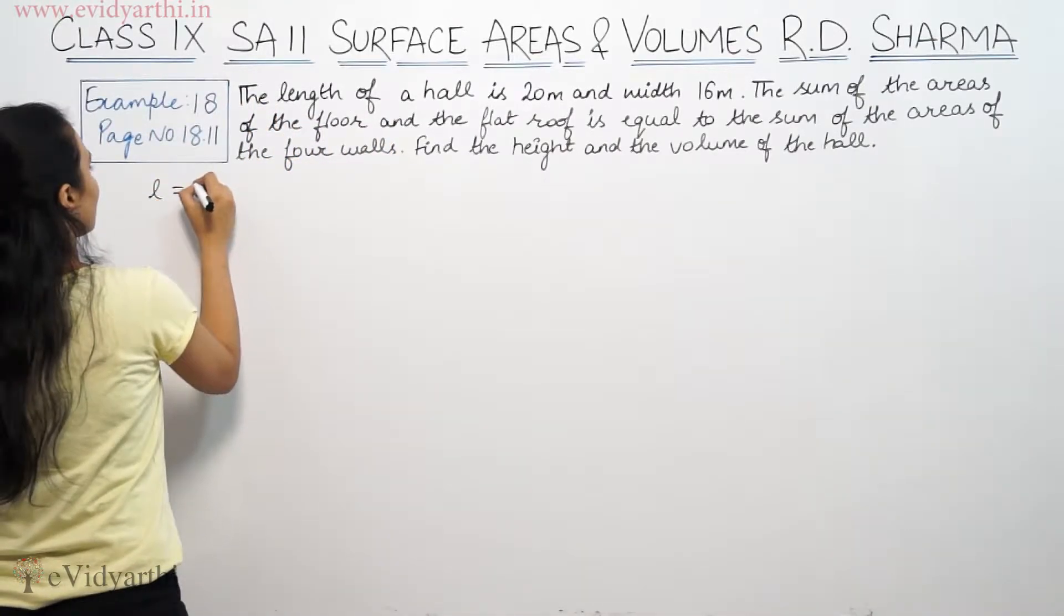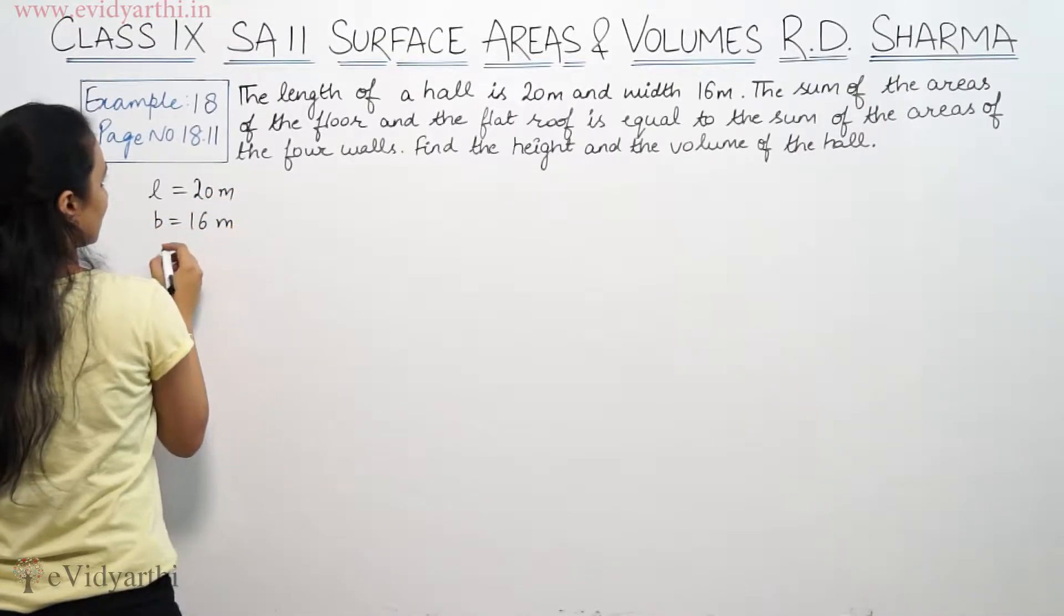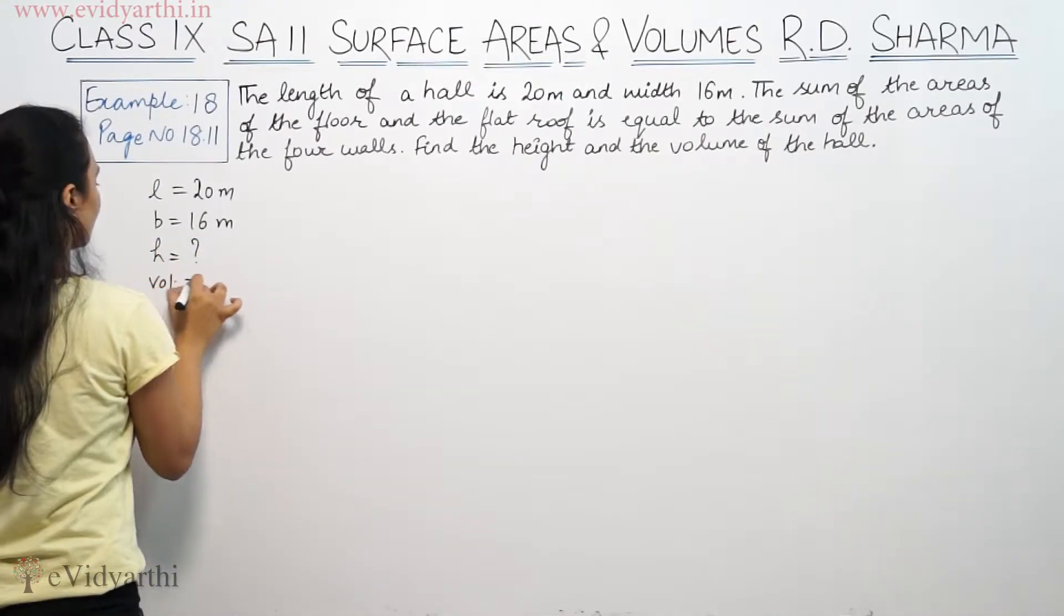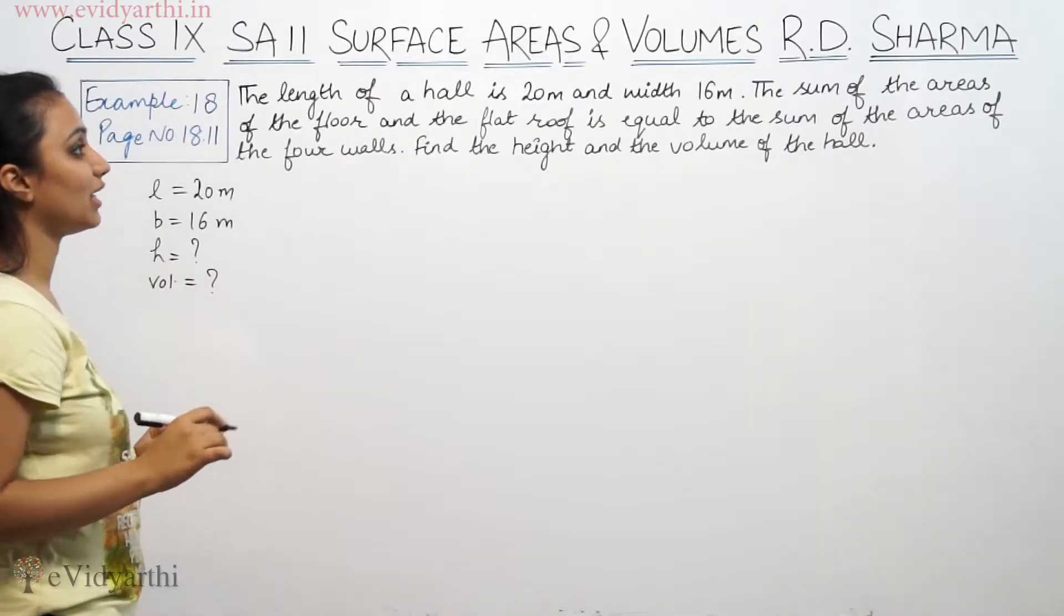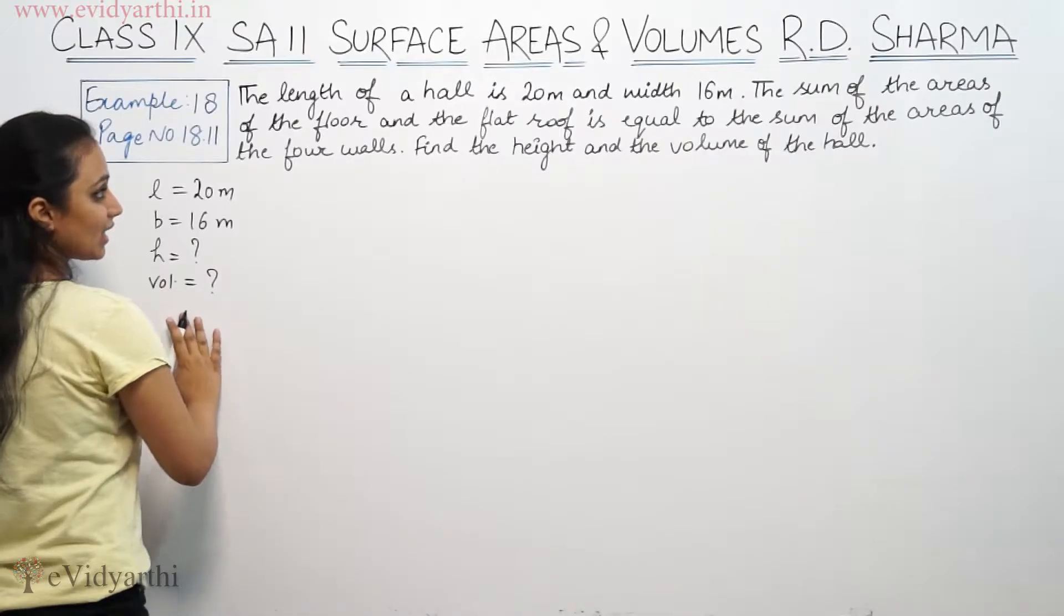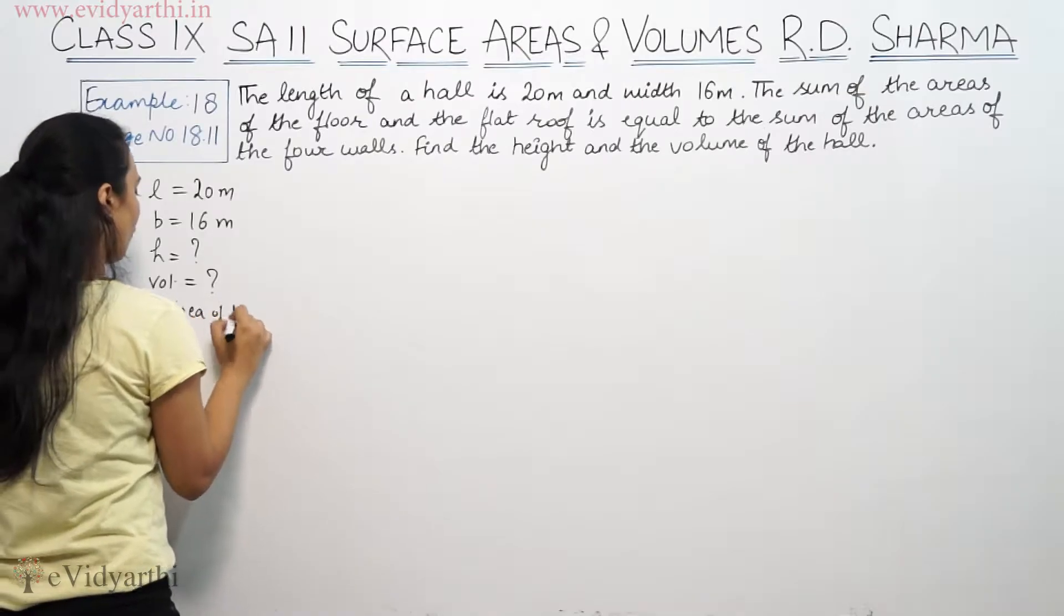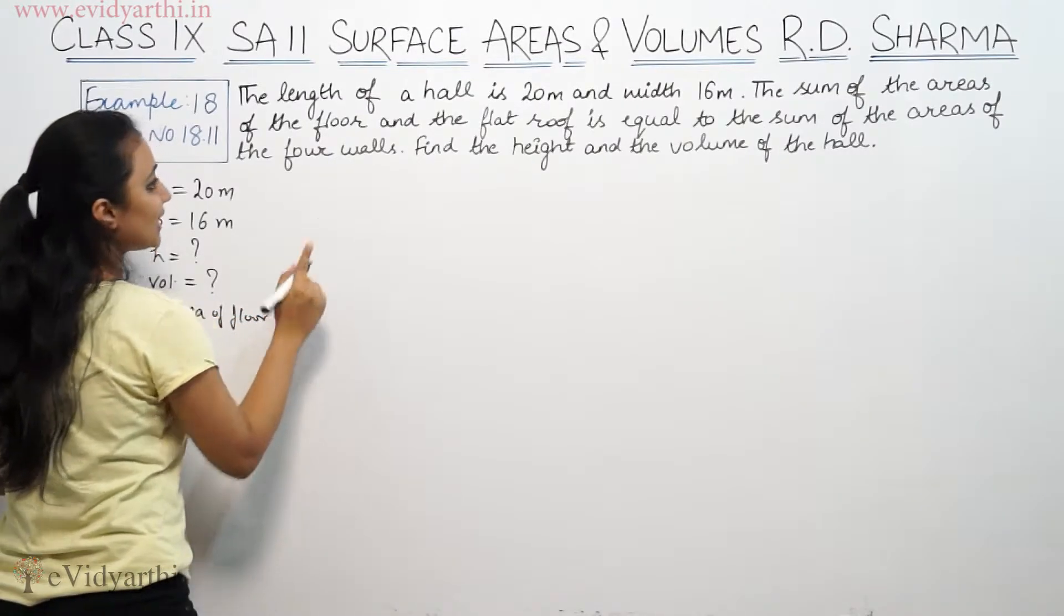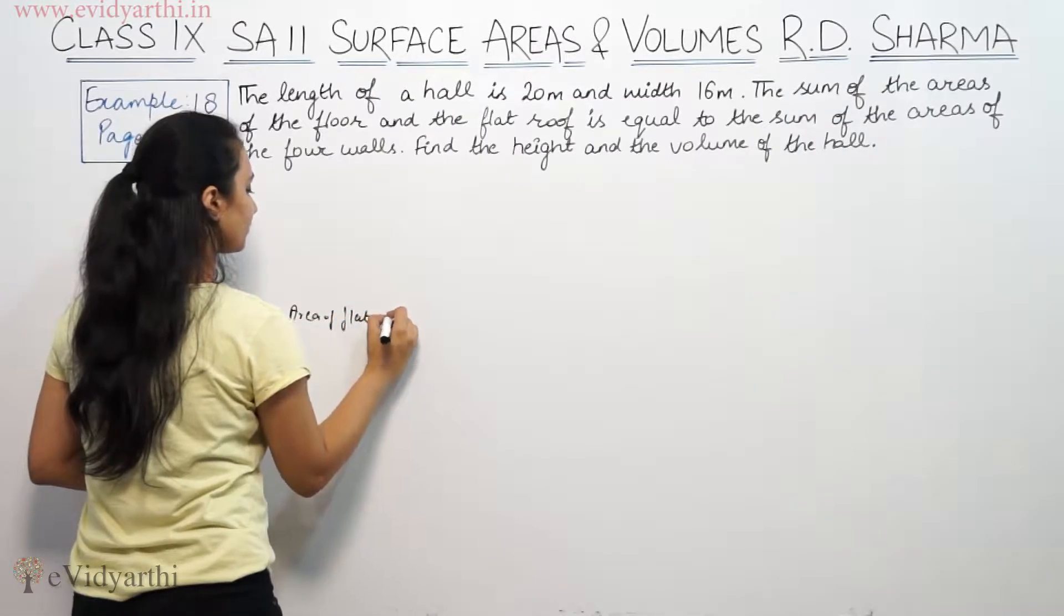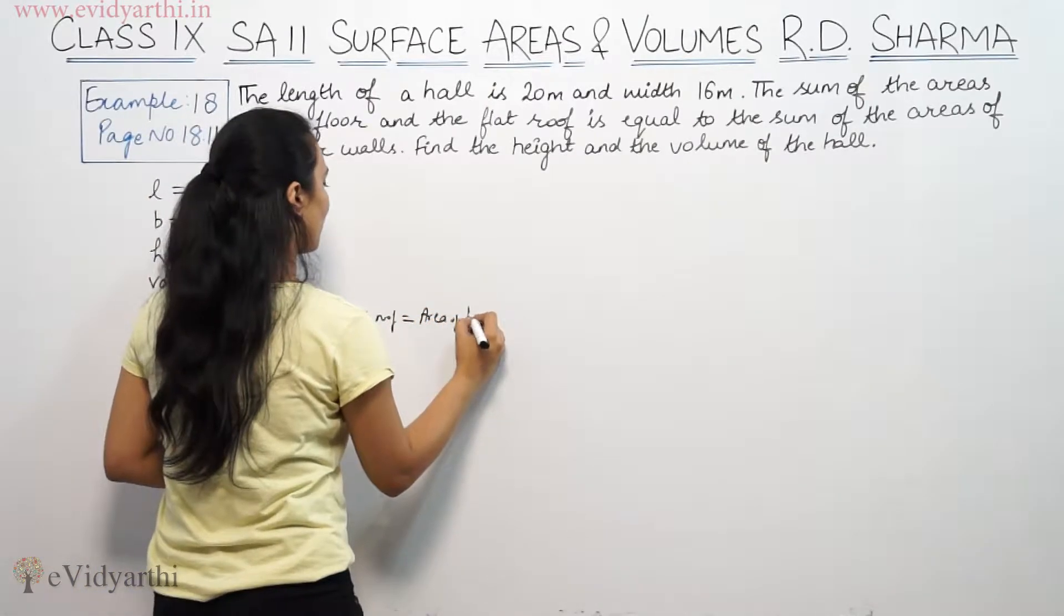So, length is given which is 20 meters and width is 16 meters. We need to find the height and volume. It says sum of areas of the floor and flat roof equals the sum of area of 4 walls.